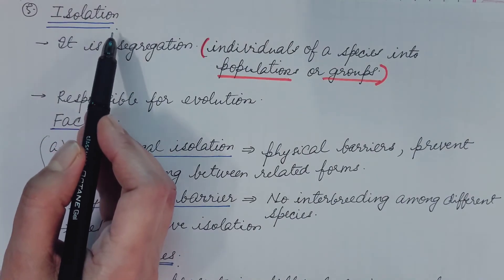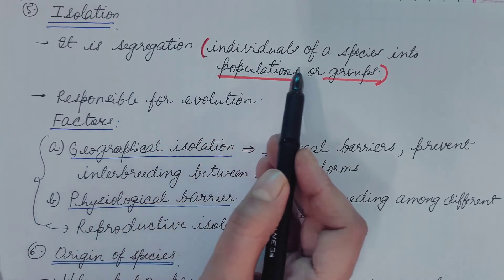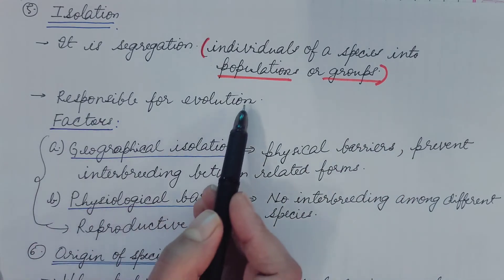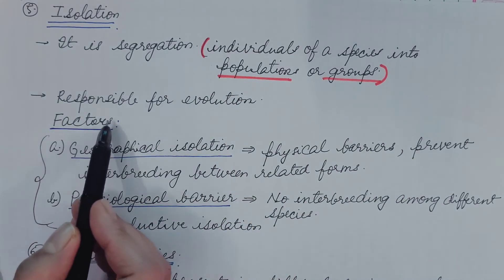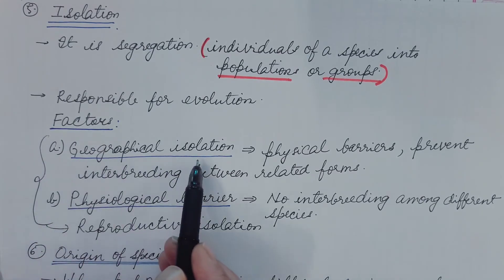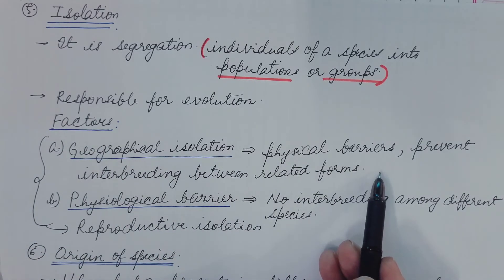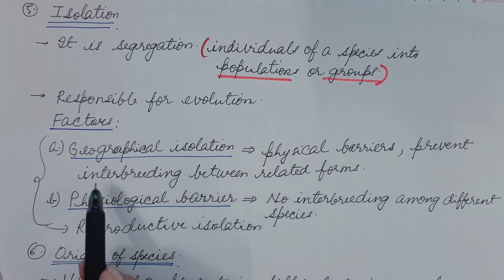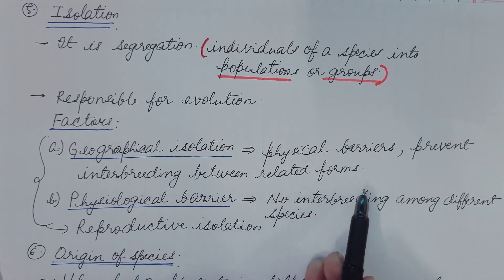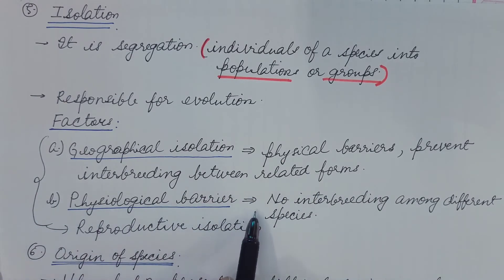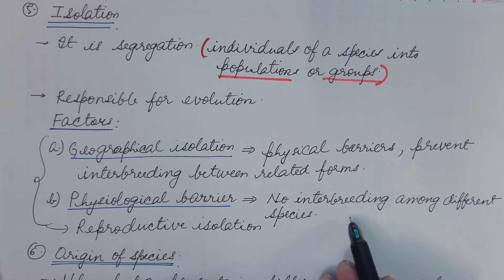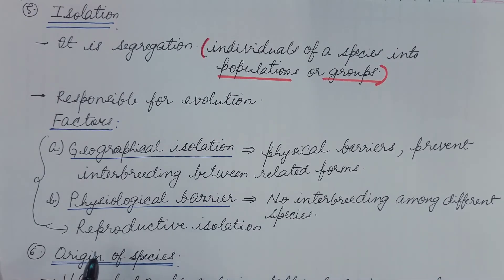So now fifth is isolation. It is segregation or separation of individual of a species into populations or groups. It is responsible for evolution. Two factors of isolation are geographical isolation. These are physical barriers like rivers, oceans, mountains, etc. and these prevent interbreeding between related forms. Second is physiological barrier. This does not allow interbreeding among different species in order to maintain the individuality of the species and these two lead to reproductive isolation.